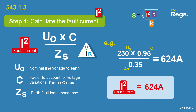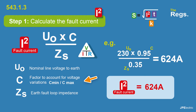Step one is to calculate the fault current — just a bit of Ohm's law. Voltage divided by resistance gives you current. The voltage is the nominal voltage to earth, in this case 230 volts. We have a correction factor known as Cmin to account for voltage fluctuations — we multiply the voltage by Cmin, which is 0.95, and divide by ZS. So 230 times 0.95, divided by 0.35, gives us a fault current of 624 amps.